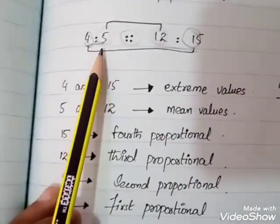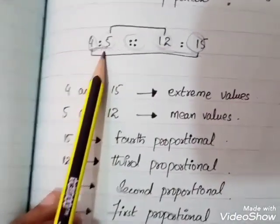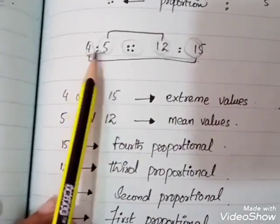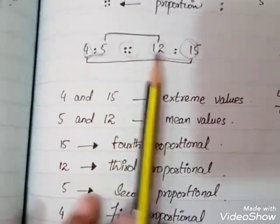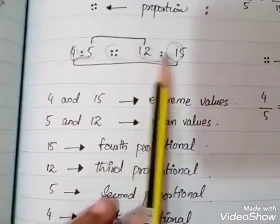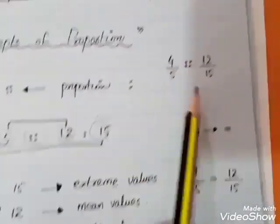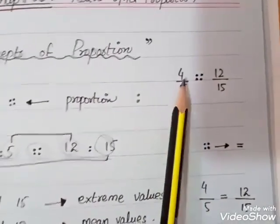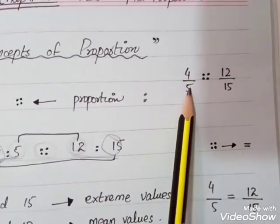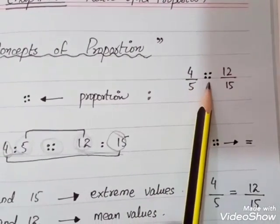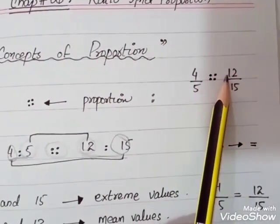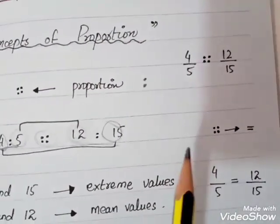You know the meaning of ratio — that we can write it as a division. So 4 ratio 5 and 12 ratio 15 can also be written as 4 upon 5, proportion, 12 upon 15.